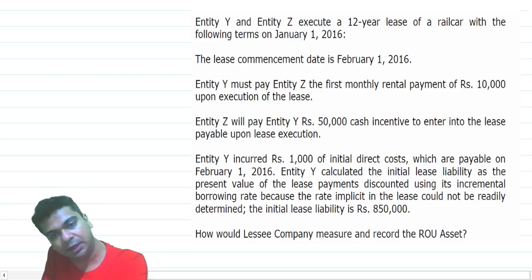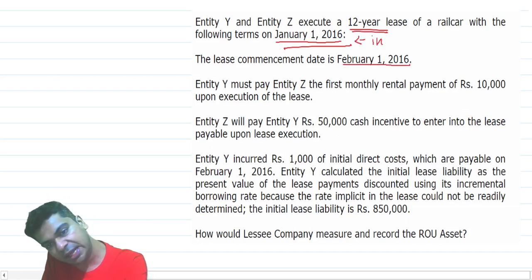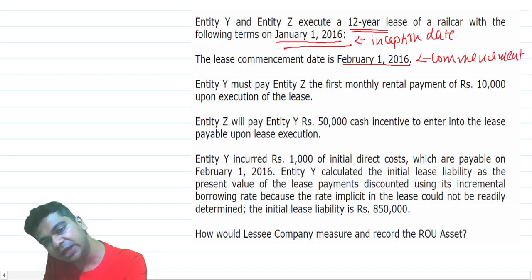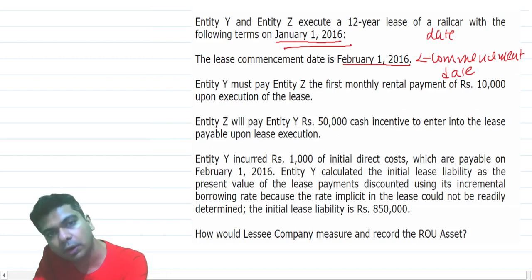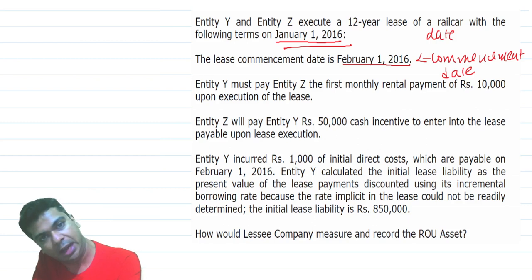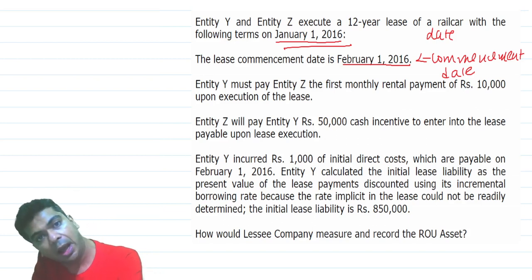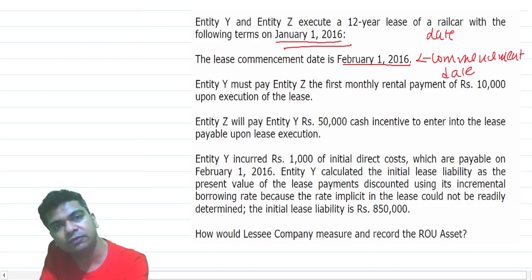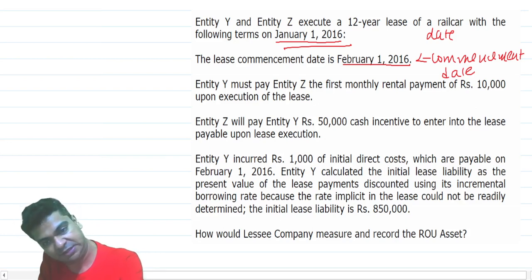So there are two entities entering into a 12-year lease, and it is 1st January 2016, with the lease commencement date being 1st February 2016. So 1st January 2016 seems to be the inception date, while 1st February 2016 is the commencement date. Remember, all the calculations relating to the lease occur only from the commencement date. On 1st January 2016 you simply analyze whether the contract contains a lease or not — you will not record any accounting entry on that date. Accounting entries are recorded only from the commencement date, which is the date on which the lessor makes the asset available to the lessee, happening on 1st February 2016.